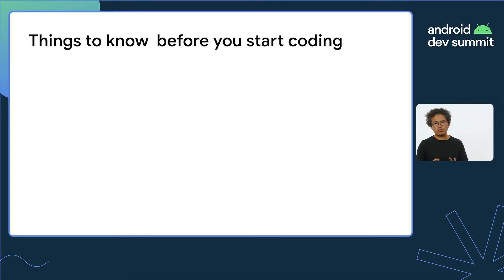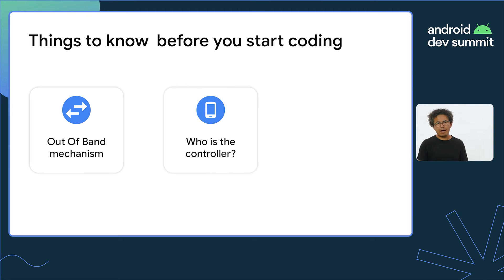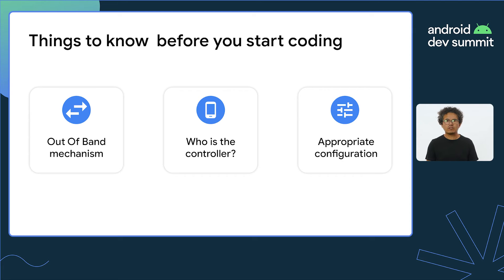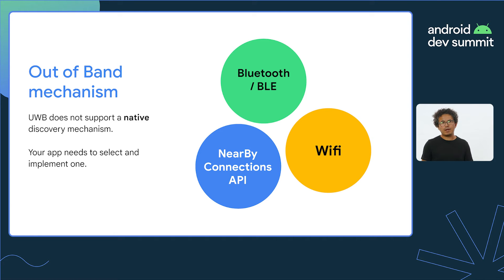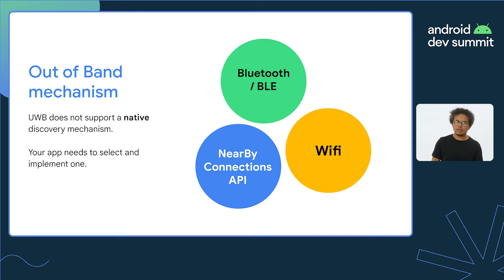Before we look at the code, let's review a few things you need to know: your out-of-band mechanism, the role of your app in the communication, and the configuration needed for the devices you will work with. The out-of-band, or OOB, is just the way UWB devices find each other. UWB doesn't have a native discovery mechanism, and the Jetpack library does not provide one either. So you will need to choose one for your app and implement it before you start a UWB session. BLE Scan and Advertisement is the most common OOB used, but you could also use other RF technologies like Wi-Fi, GATT, or the Nearby Connections API.